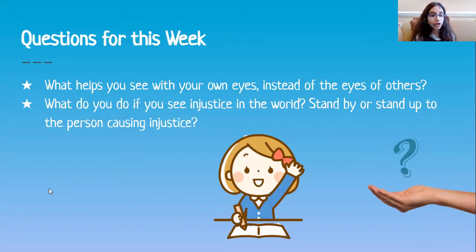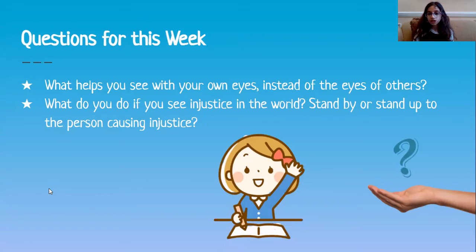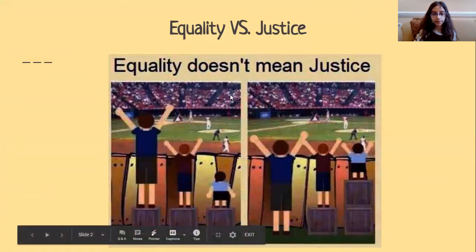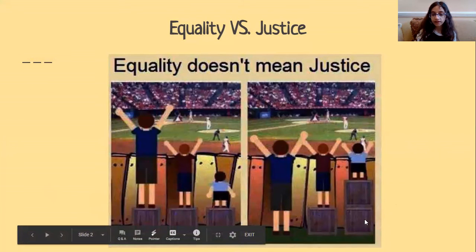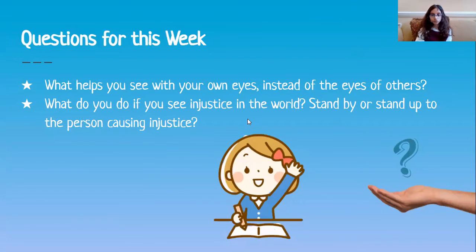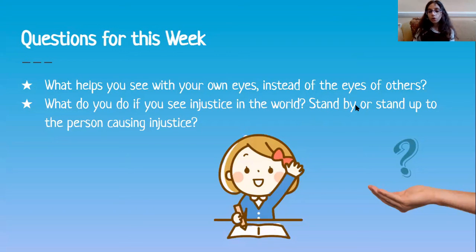The second question is: what do you do if you see injustice in the world? Do you stand by or stand up to the person causing injustice? Now, there isn't always a person causing injustice. Sometimes it's just something that is not fair. Like as we saw here with the equality picture, this injustice was not on purpose. But then here, they fixed it so that they could all see over the fence. So this second question is your choice: do you want to stand up to the person causing injustice, or would you stand by and just ignore it?